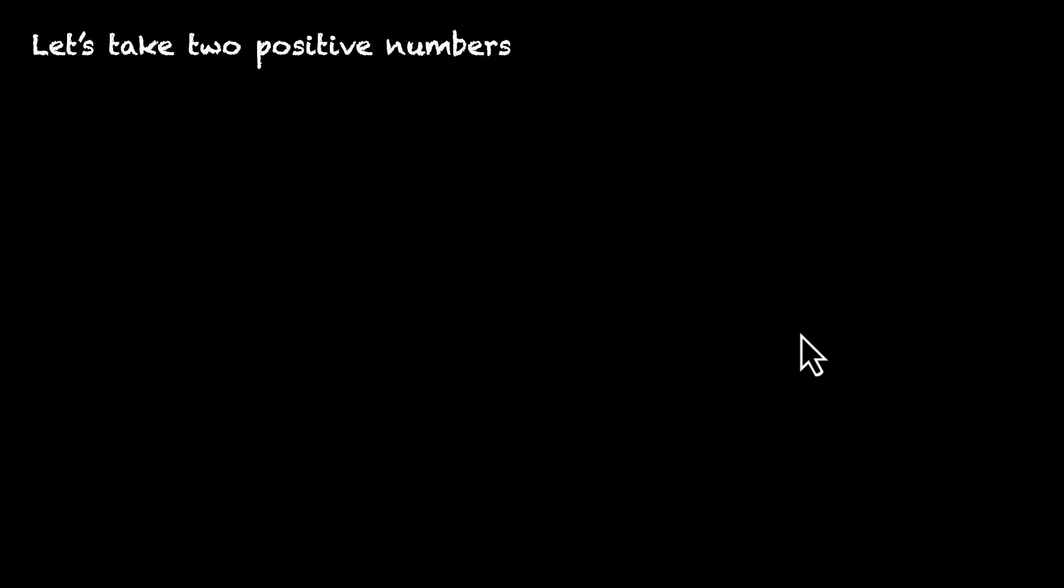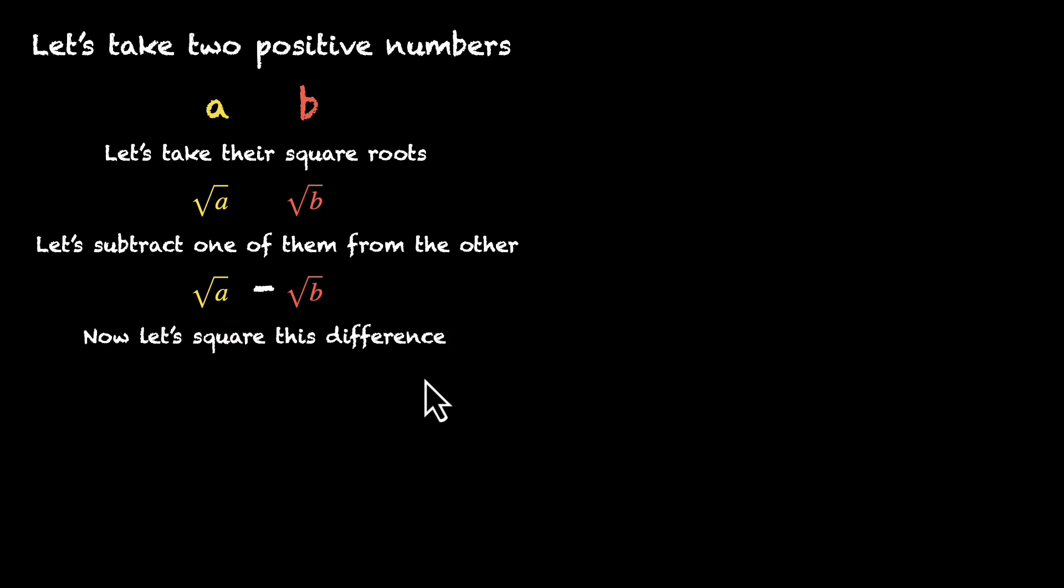Let's start with two positive numbers, a and b. Let's take the square roots: √a and √b. Now let's subtract one from the other: √a - √b. Now let's square this difference. We have (√a - √b)².